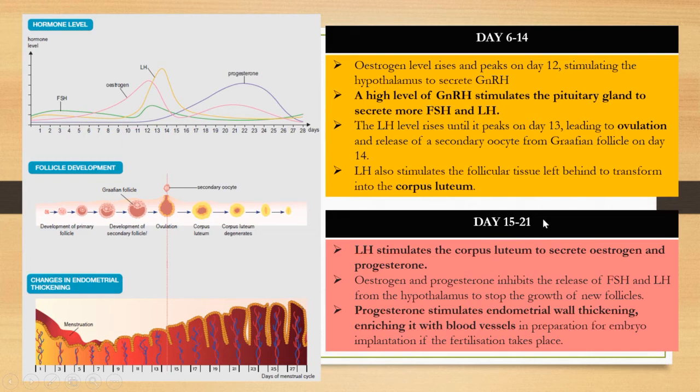Now we look at Day 15 to Day 21, the phase after ovulation. From the hormone graph, we can observe that progesterone increases, LH level decreases, and estrogen level also increases during this phase.